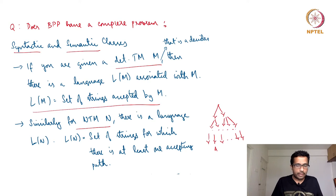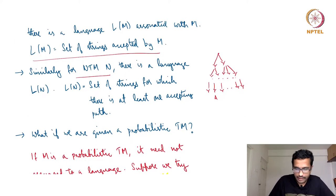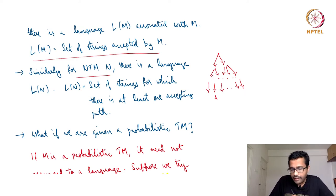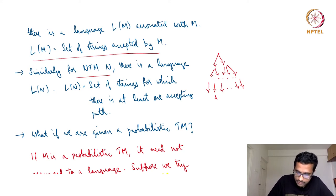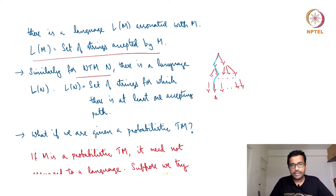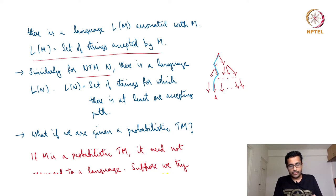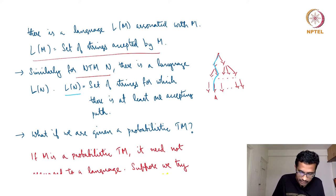Similarly, for a non-deterministic Turing machine, we could draw a computation tree as I have drawn on the right-hand side. We could look at the set of strings that have at least one accepting path — something like there is one accepting computation. These are the set of strings accepted by this Turing machine N, and we can call it L_N, which is a class of strings that have at least one accepting path.